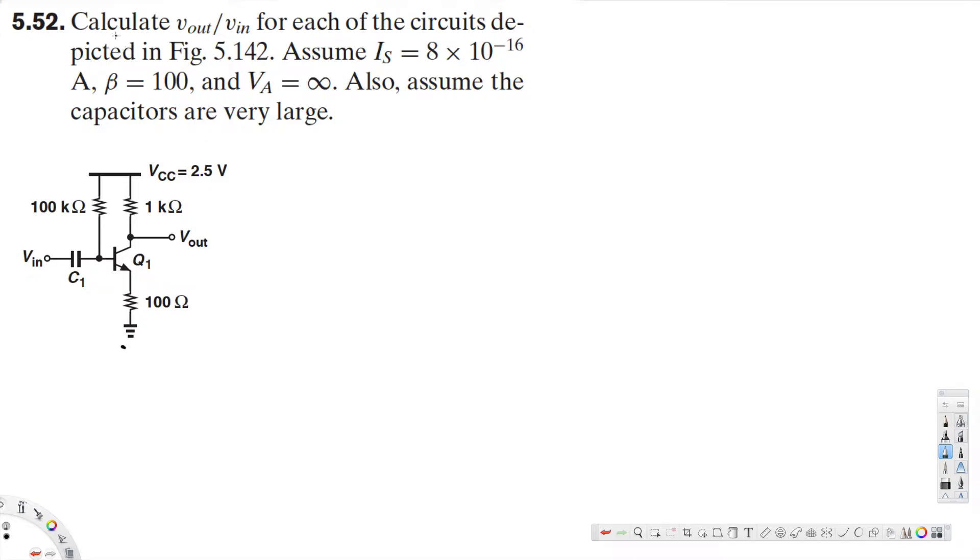Hey, what's going on guys, let's look at this problem. The question is asking to calculate v_out over v_in for each of the circuits depicted in figure 5.142. Assume I_S equals 8 times 10 to the minus 16 amperes, beta equals 100, and V_A equals infinity.